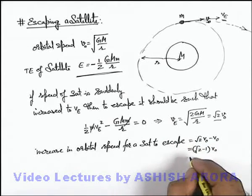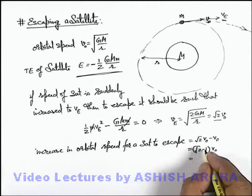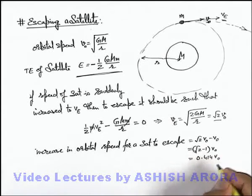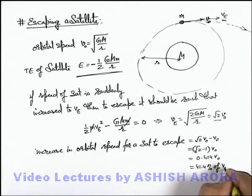And this can be written as - if we put the value of root 2 as 1.414, it is 0.414 v_not. So this can be written as 41.4 percent of v_not, that is orbital speed.